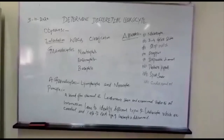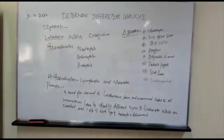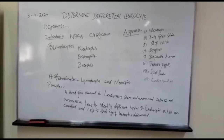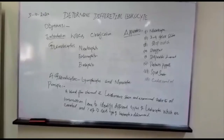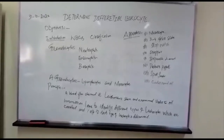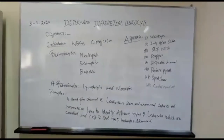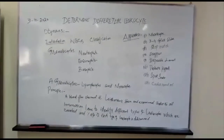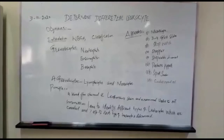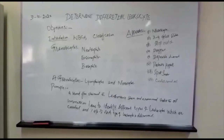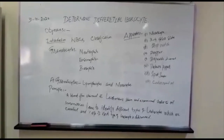Here are some learning objectives about this practical: how to prepare a properly stained film, identify different types of white blood cells, know the clinical significance of differential leucocyte count, and realize the importance of performing DLC as a routine lab investigation.